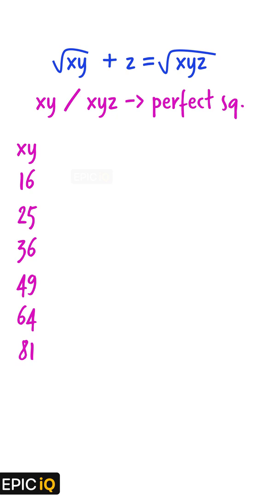Now, xyz is also a perfect square, whose first two digits are either 16, 25, 36, 49, 64, or 81.